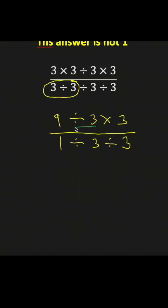9 divided by 3 in the numerator, and 1 divided by 3 in the denominator. In the numerator, we get 3. In the denominator, we get 1 third.